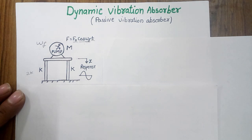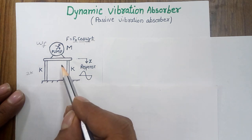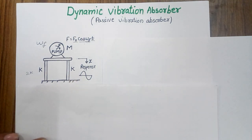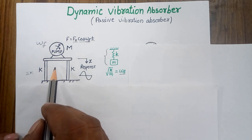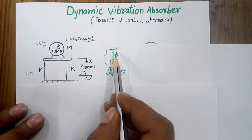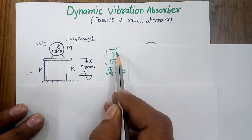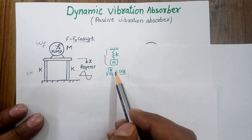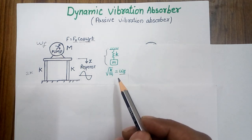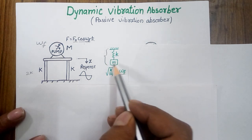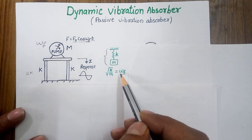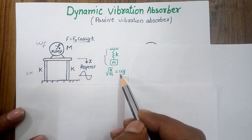If I want to reduce the vibration of this system, I can use a dynamic vibration absorber. The philosophy of a vibration absorber is that we have to add an additional spring-mass system onto our parent system. So let's assume a secondary spring-mass system of stiffness k and mass M.